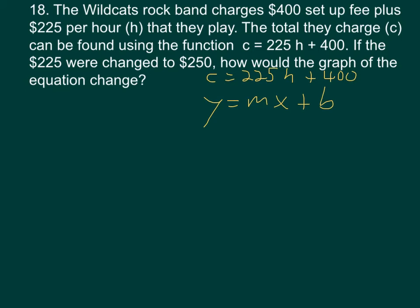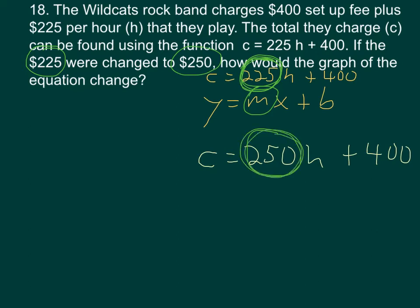If we look at it that way, we can see that the slope is 225. If we change 225 to be 250, then our new equation is going to be C equals 250H plus 400. In other words, our slope has gone from 225 to 250. And we all know that if the slope goes up, things get steeper.